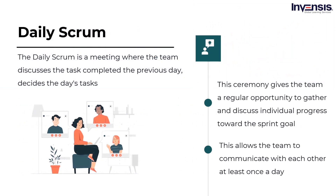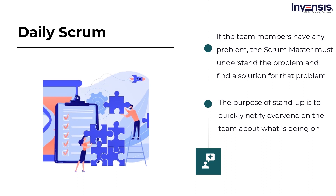The next Scrum ceremony is the Daily Scrum. The Daily Scrum is a meeting where the team discusses the tasks completed the previous day, decides the day's tasks, and discusses any problems the team members face. This ceremony gives the team a regular opportunity to gather and discuss individual progress toward the sprint goal, allowing the team to communicate with each other at least once a day. The purpose of the stand-up is to quickly notify everyone on the team about what is going on — it is not a comprehensive status meeting. Ask each team member: What did I do the day before? What am I going to work on today? And is there anything impeding my progress?